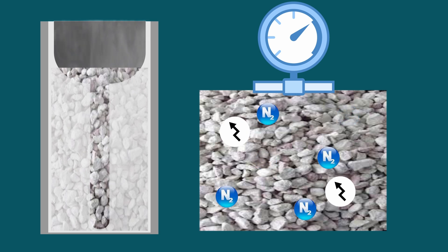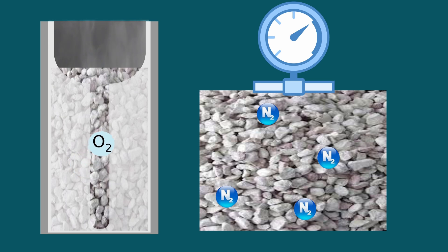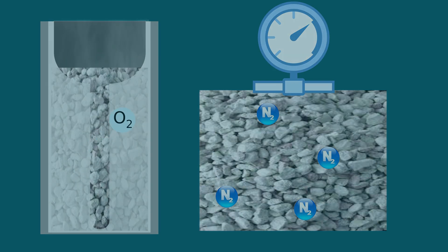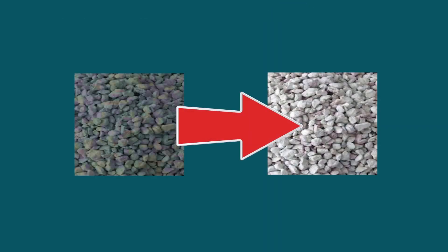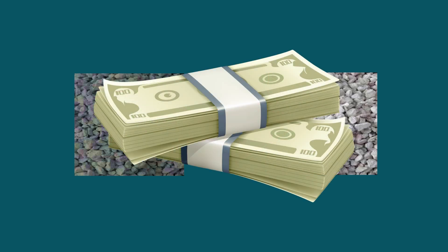Zeolite smoothly absorbs nitrogen, but its absorptivity is gradually exhausted and the efficiency of generating concentrated oxygen decreases. In this case, zeolite should be replaced with a new one, which requires additional financial costs for the purchase of new zeolite and disposal of spent zeolite.